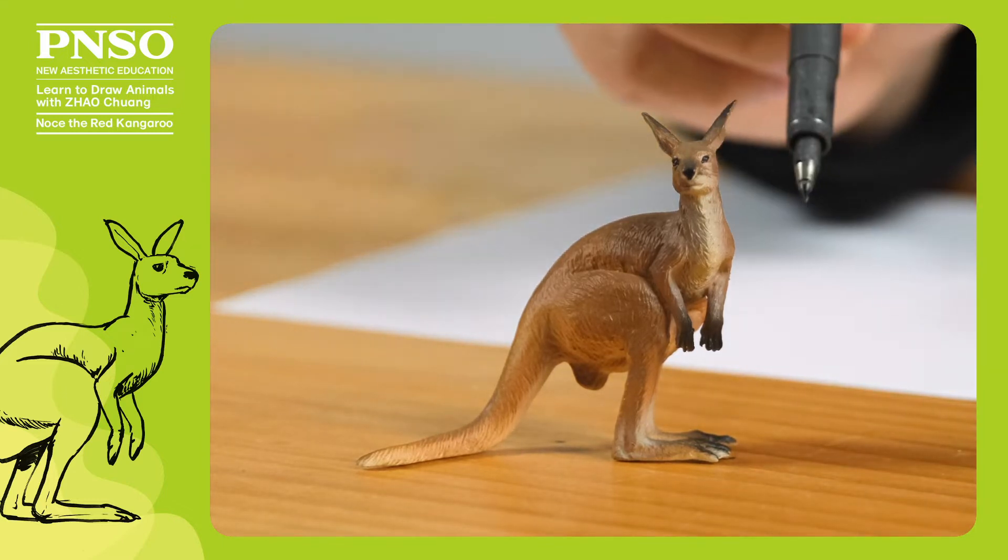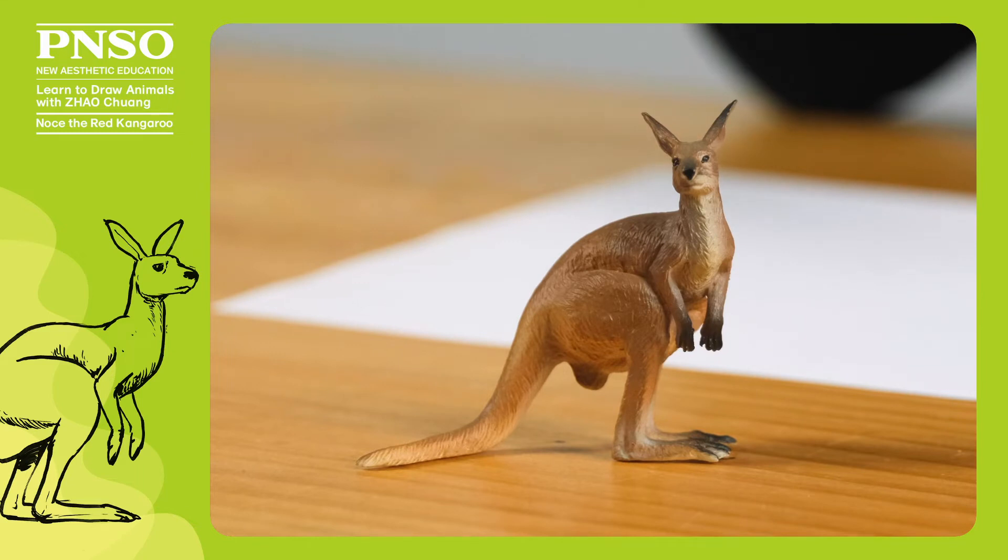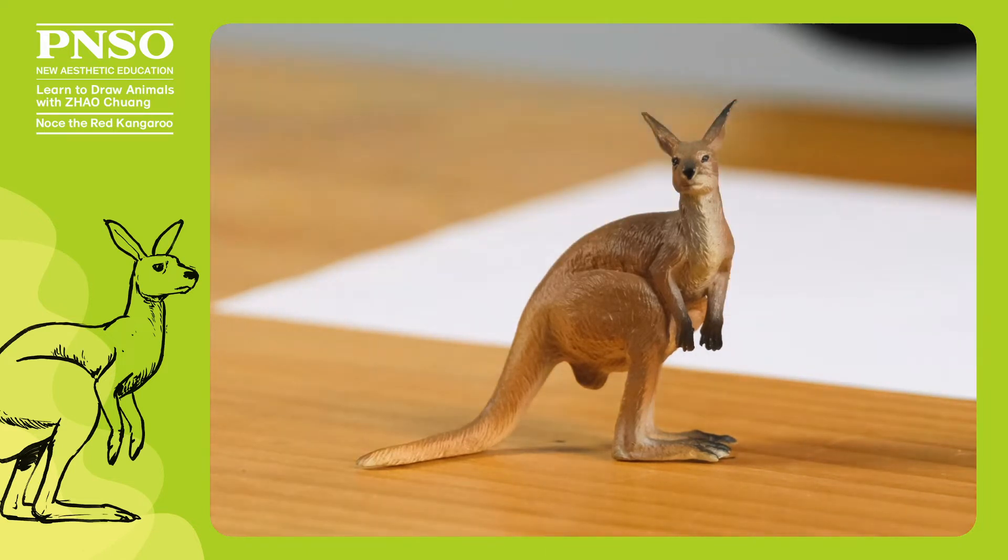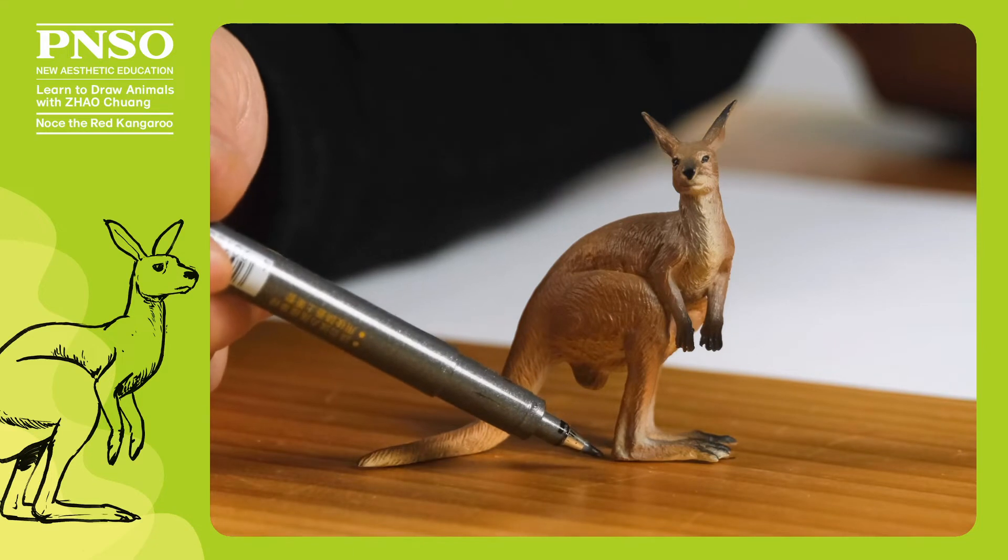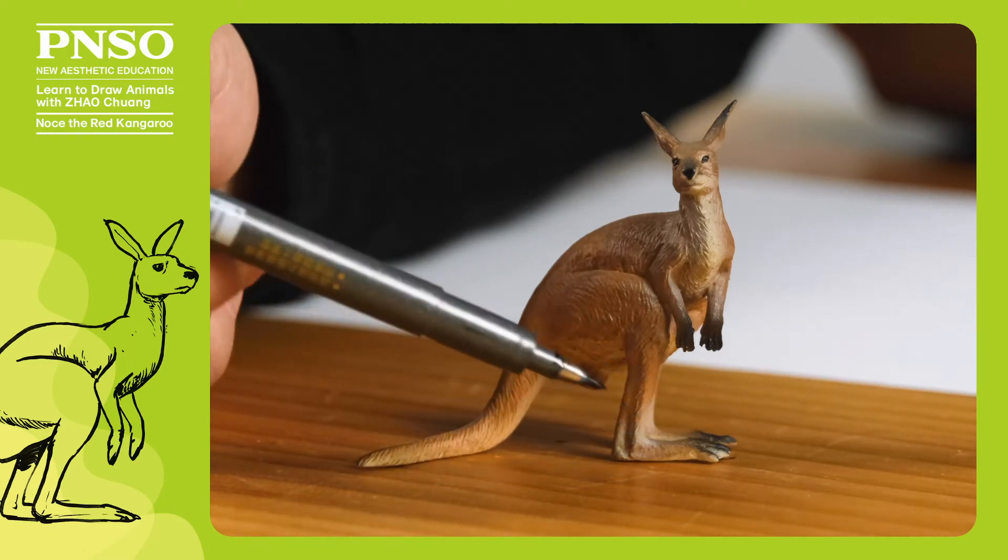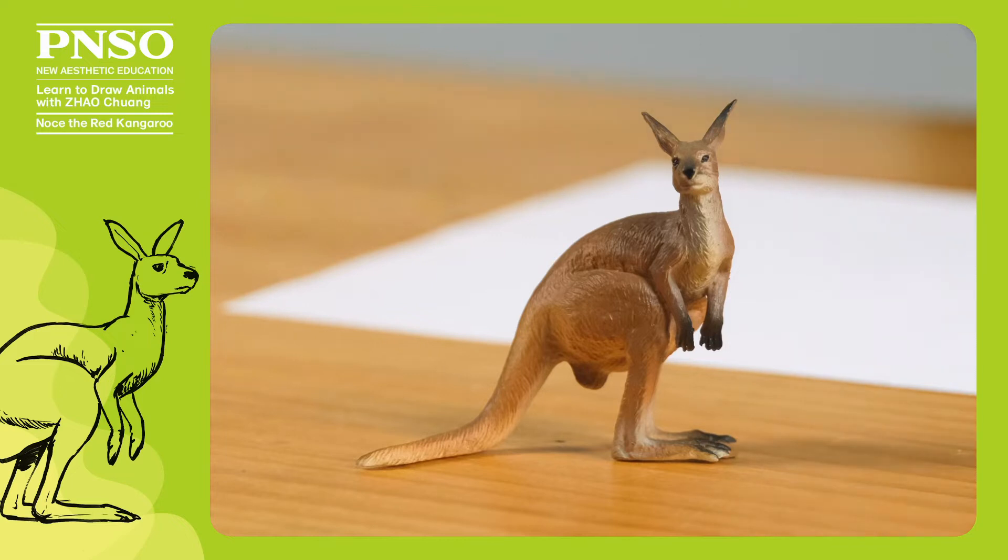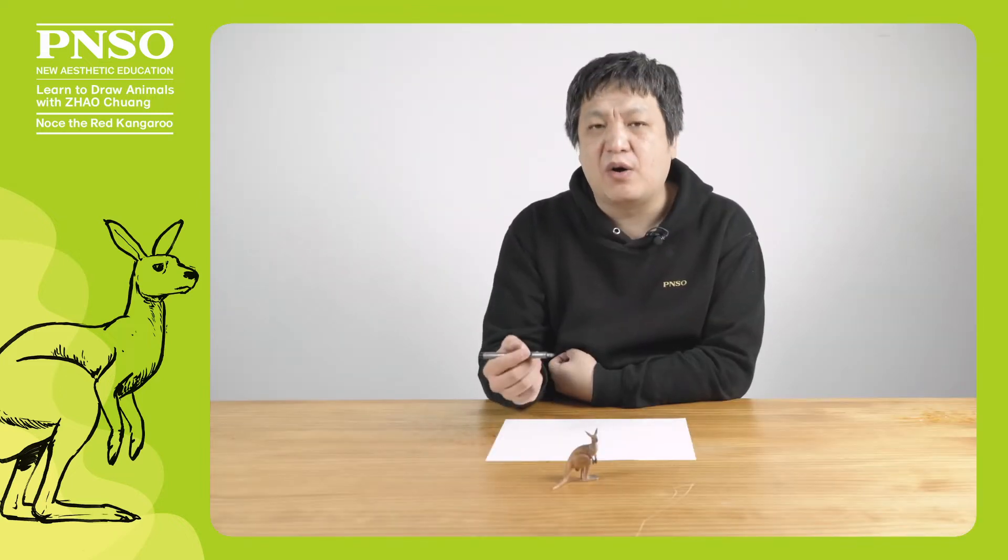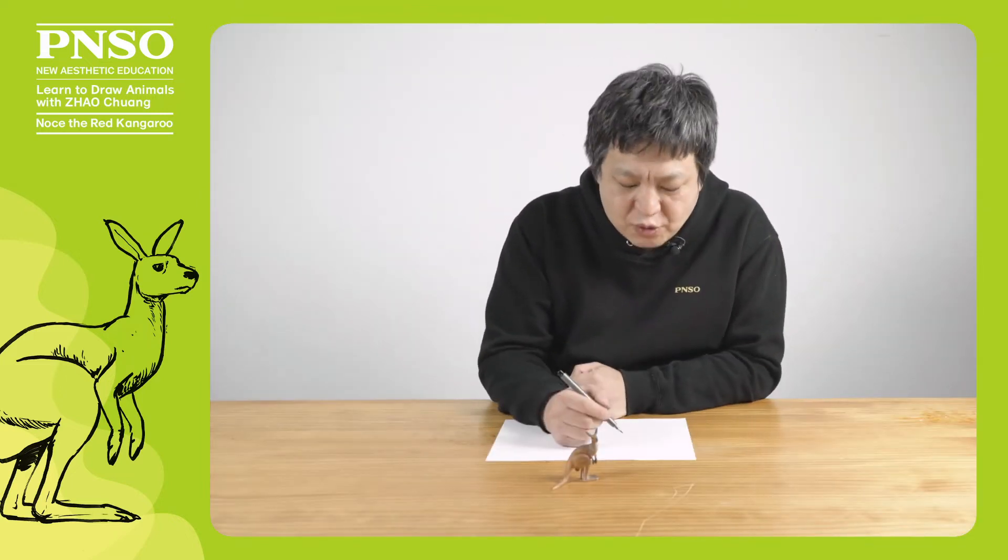Its forelimbs are very short and with long clawed hands. Its entire back arches up in a prominent curve. Its hind limbs are very long. Its two feet, especially the part between its heel and its toes, which is called Metatarsus bone, is very long. After we knowing all the points, we can start to draw the kangaroo.